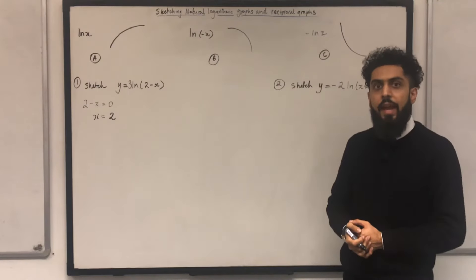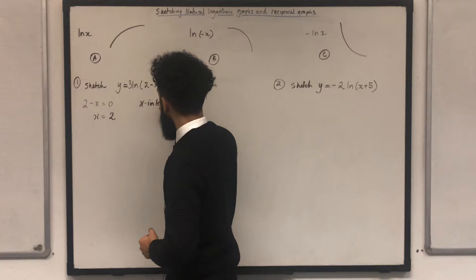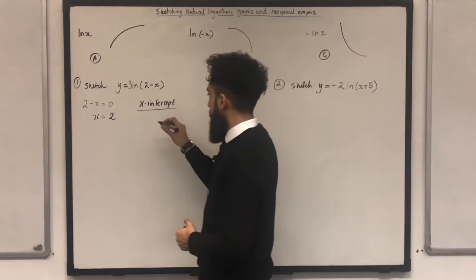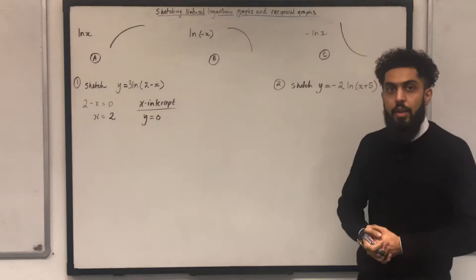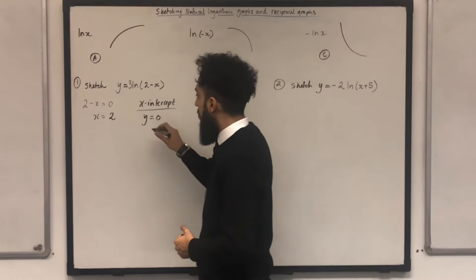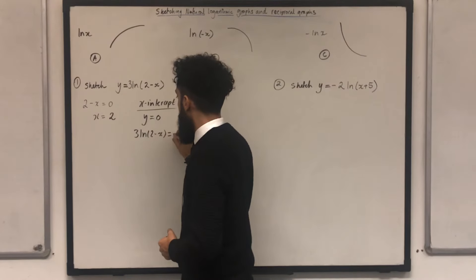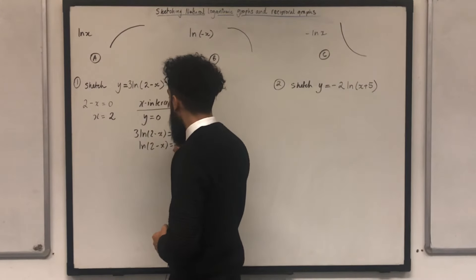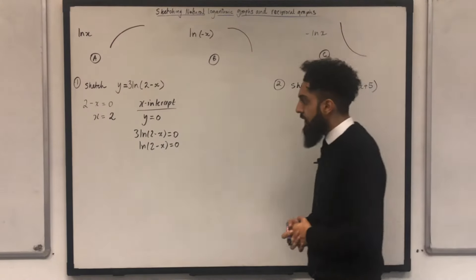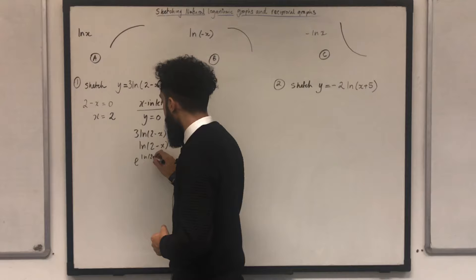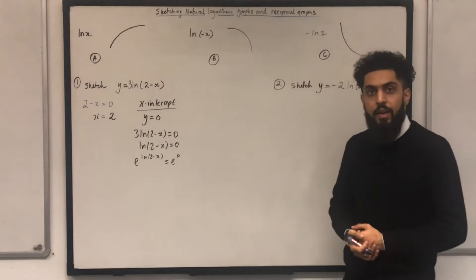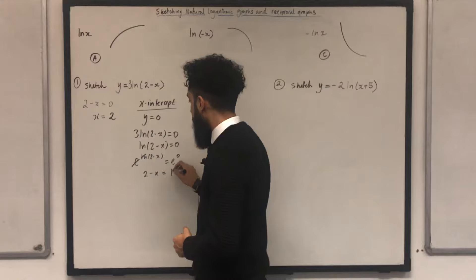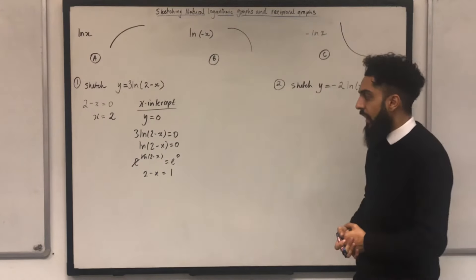Now I want to work out the x-intercept. To find it, I set y = 0. So I'm solving 3ln(2 - x) = 0. Dividing both sides by 3 gives ln(2 - x) = 0. To get rid of ln, I apply e to both sides. Since e and ln are inverses they cancel, giving 2 - x = e⁰ = 1. Solving this equation gives x = 1.